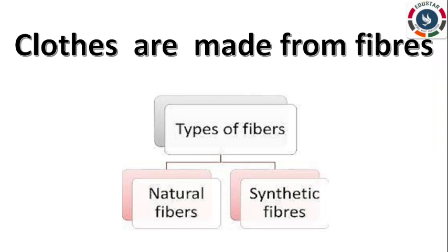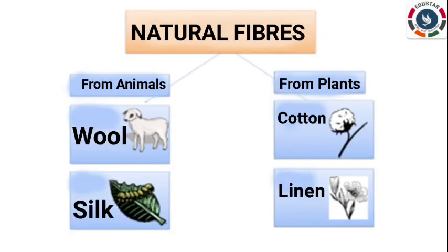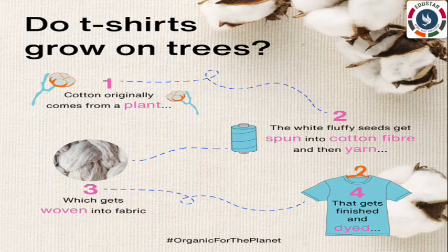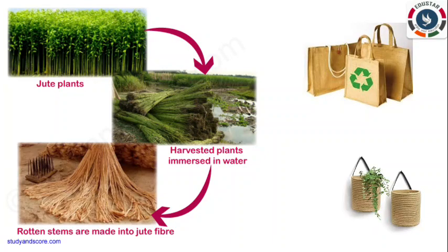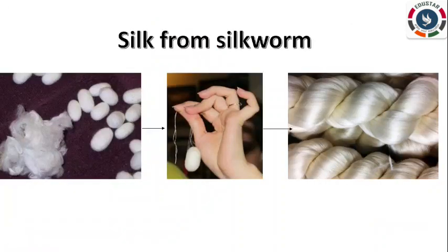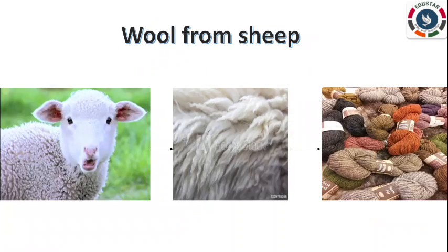Clothes are made from fibers. There are two types of fibers: natural fibers and synthetic fibers. Natural fibers are fibers obtained from natural sources such as plants and animals. For example, we get cotton, jute and linen from plants, and wool and silk from animals. We get cotton materials from the cotton plant, jute materials from the jute plant, silk from silkworm, and wool from sheep.